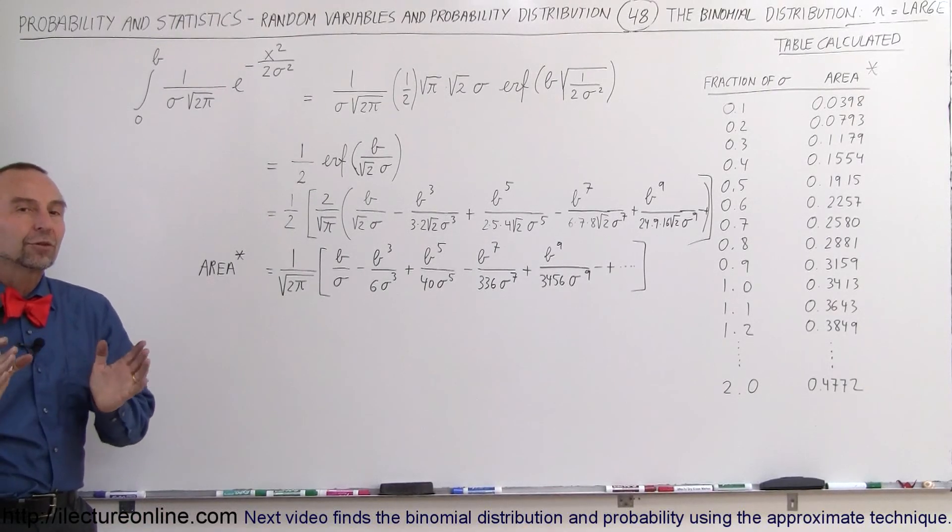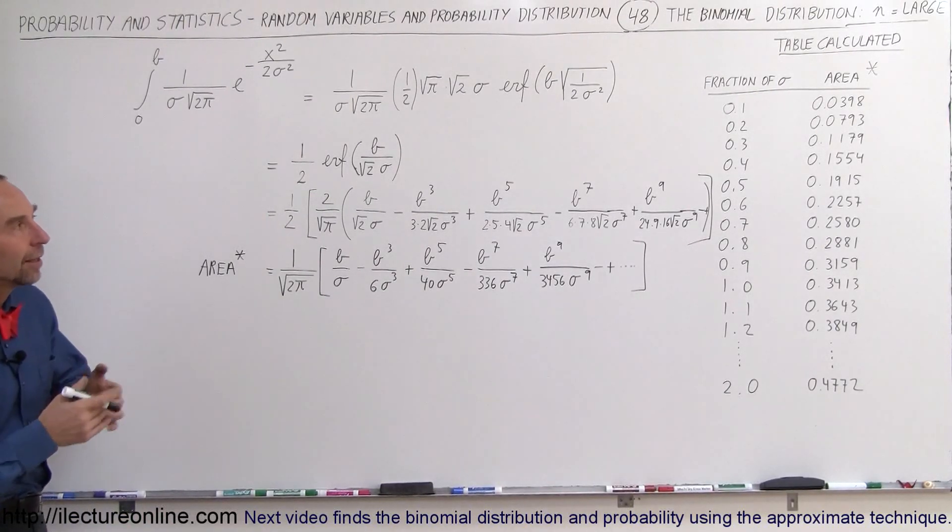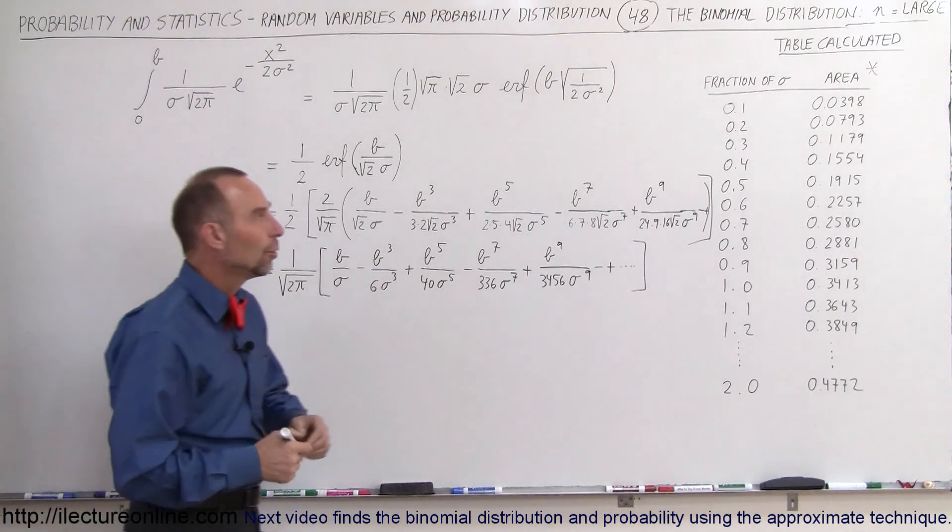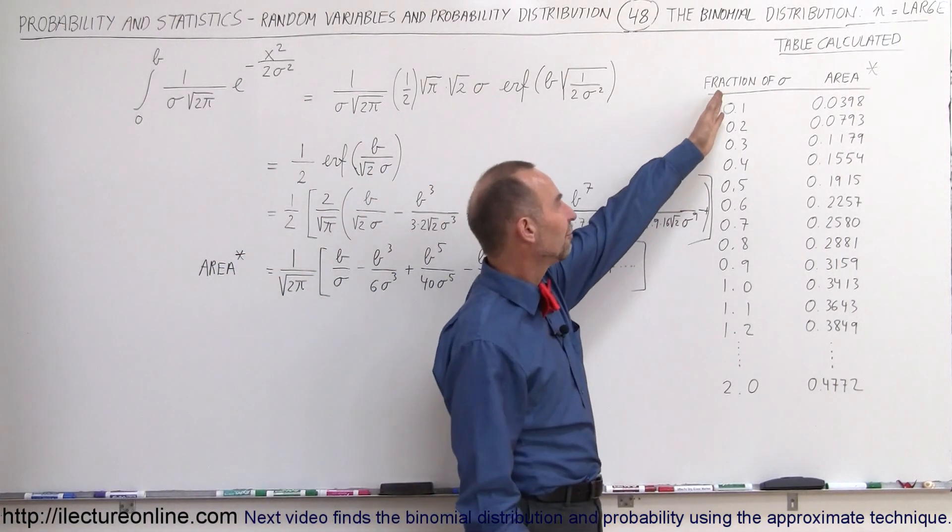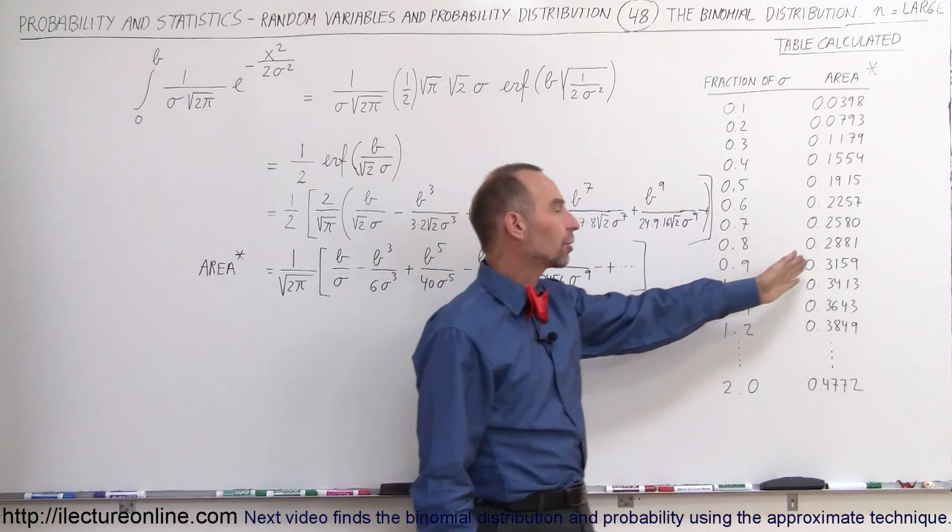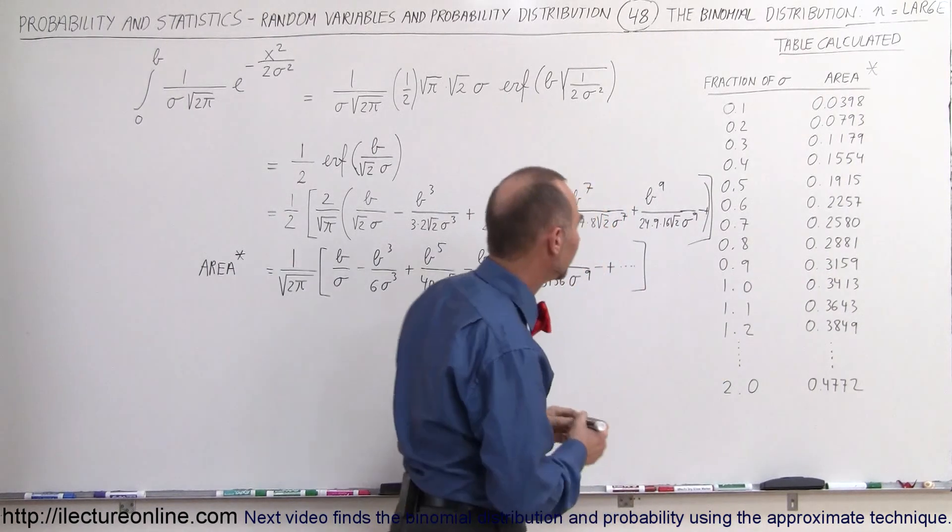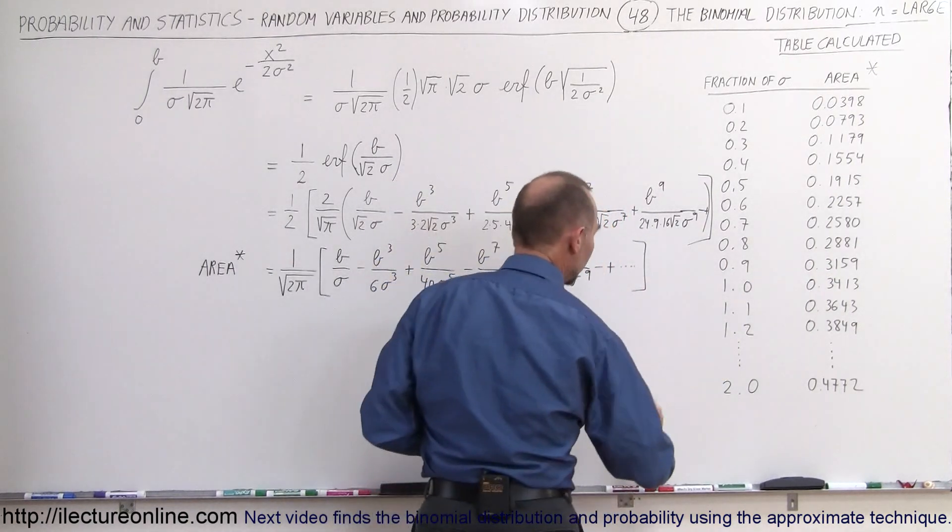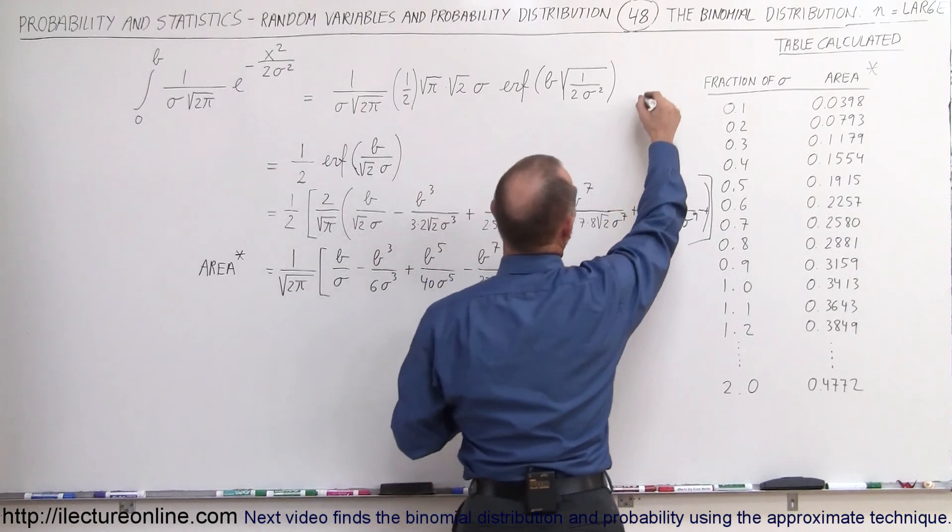Welcome to our lecture online. Here we're going to establish how we calculate the table values where we compare a fraction of sigma to the actual area underneath the curve. This is specific to one of these, and let me find a little space right here.